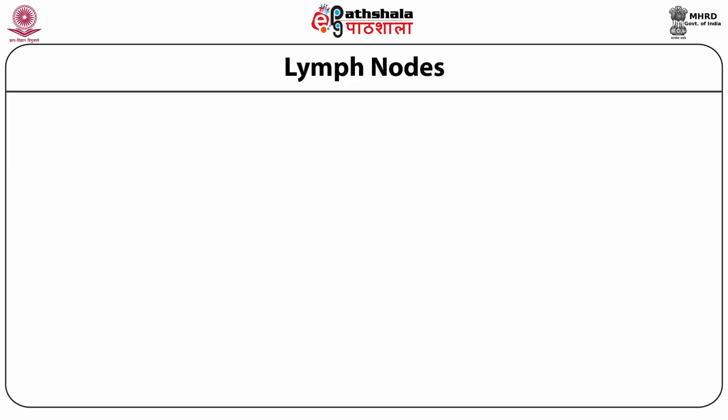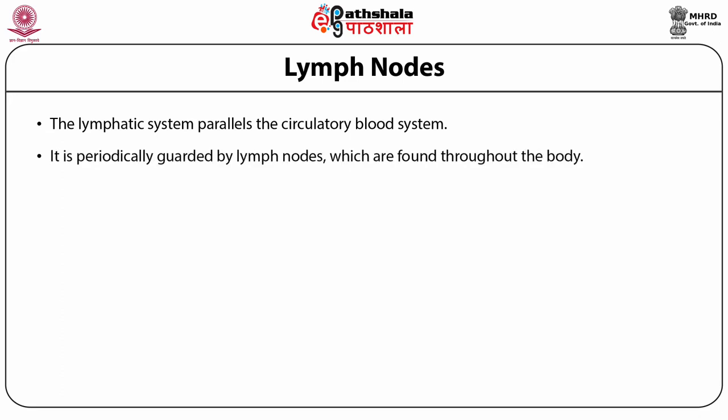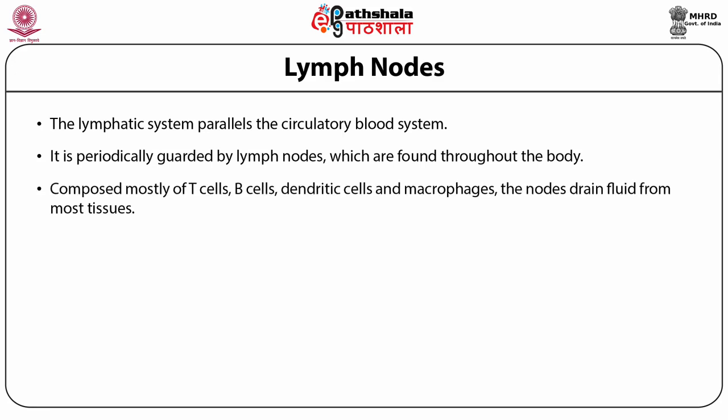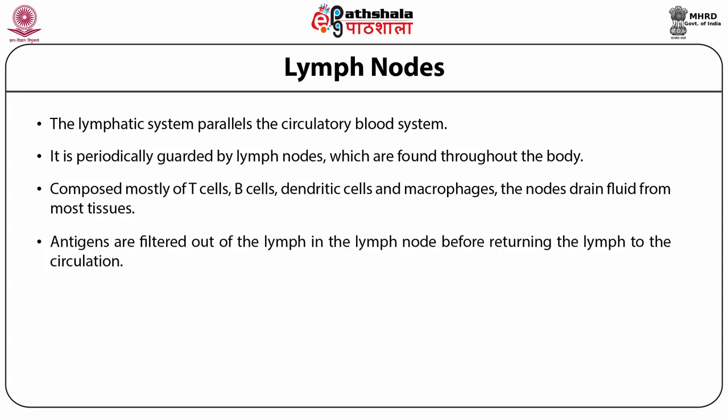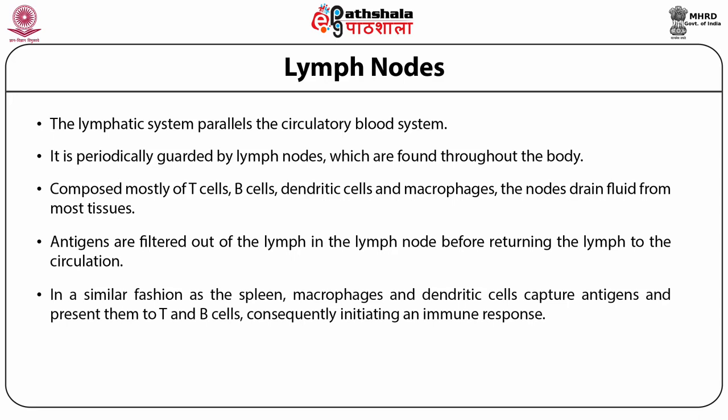Another secondary lymphoid organ is the lymph node. The lymphatic system parallels the circulatory blood system and is periodically guarded by lymph nodes found throughout the body, composed mostly of T cells, B cells, dendritic cells, and macrophages. The nodes drain fluids from most tissues. Antigens are filtered out of the lymph in the lymph node before the lymph is returned to the circulation. Macrophages and dendritic cells capture antigens and present them to T and B cells, consequently initiating an immune response.